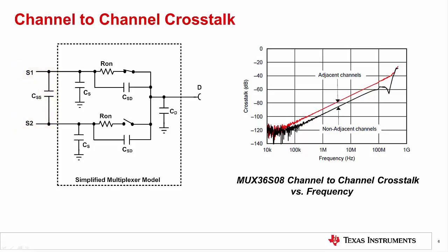In addition to higher input signal frequencies, board layout techniques that reduce stray capacitance can also help with channel-to-channel crosstalk. The graph shown highlights the MUX36SO8 crosstalk, which is negative 90 dB at 1 MHz.